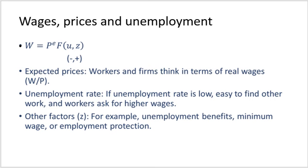The aggregate nominal wage depends on three factors: PE, the expected price level; unemployment; and the catch-all variable Z. The negative sign below unemployment shows that nominal wages depend negatively on unemployment, and the positive sign on the catch-all variable tells us that wages depend positively on the catch-all variable.